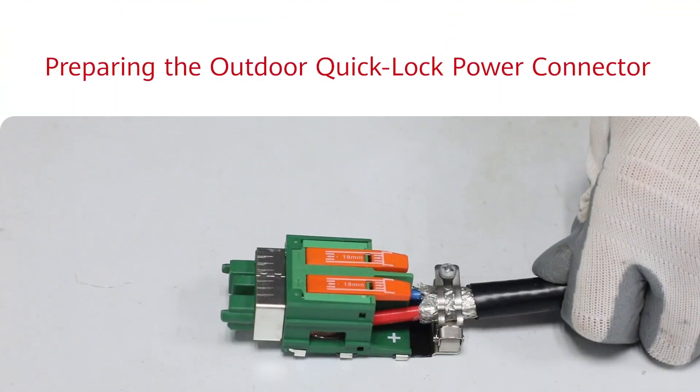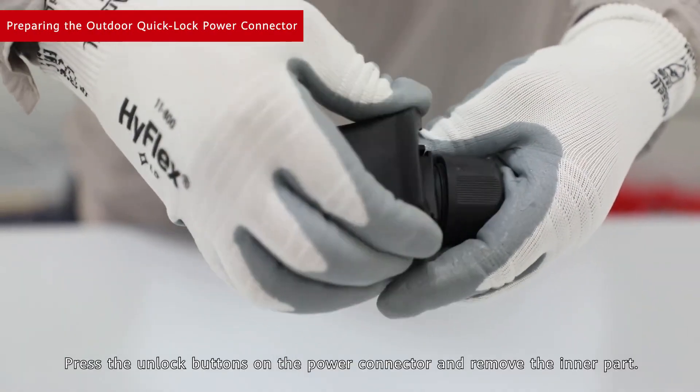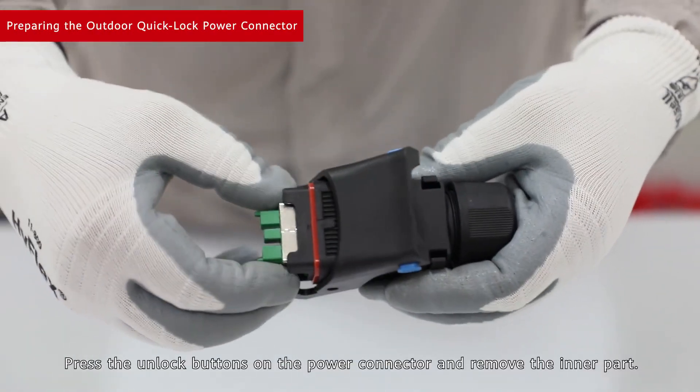Preparing the Outdoor Quick-Lock Power Connector. Press the unlock buttons on the power connector and remove the inner part.